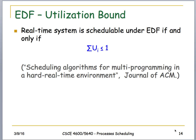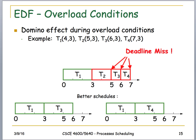The utilization bound for EDF is that the sum of all utilizations must be less than or equal to 1. As long as it stays at or below 1, we can schedule the tasks — this also comes from that same Journal of ACM article. If the sum exceeds 1 we enter an overload condition and may miss deadlines, though some alternative scheduling may still work. A good test question: what fourth process added to three existing processes would cause an EDF overload? Be sure to read the relevant textbook section.